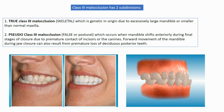Class 3 malocclusion has two subdivisions. First, true Class 3 malocclusion, which is genetic in origin due to an excessively large mandible or a smaller than normal maxilla. Second, pseudo Class 3 malocclusion, which occurs when the mandible shifts anteriorly during the final stages of closure due to premature contact of incisors or canines. Forward movement of the mandible during jaw closure can also result from premature loss of deciduous posterior teeth.